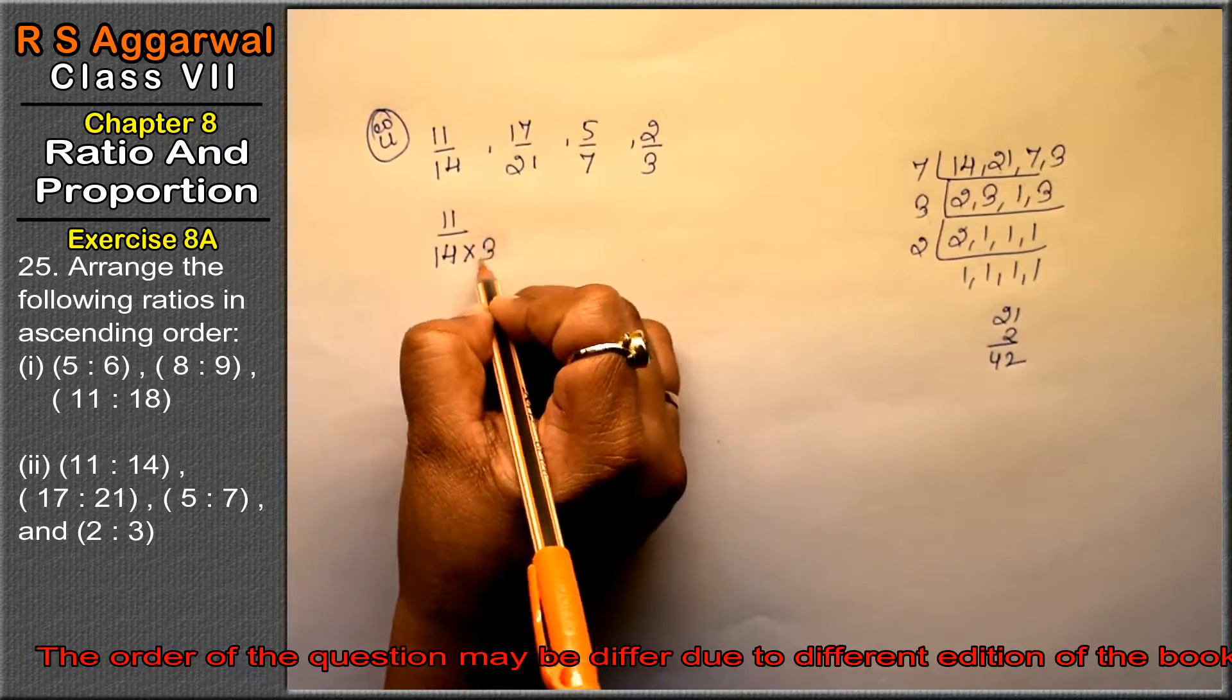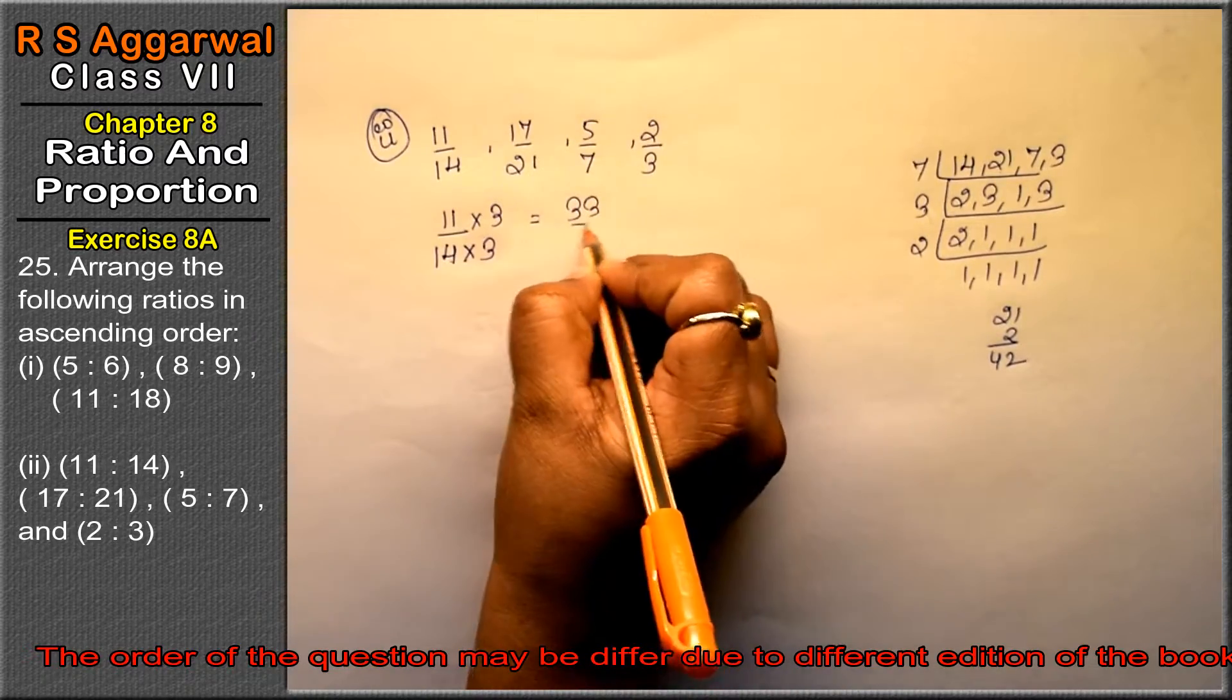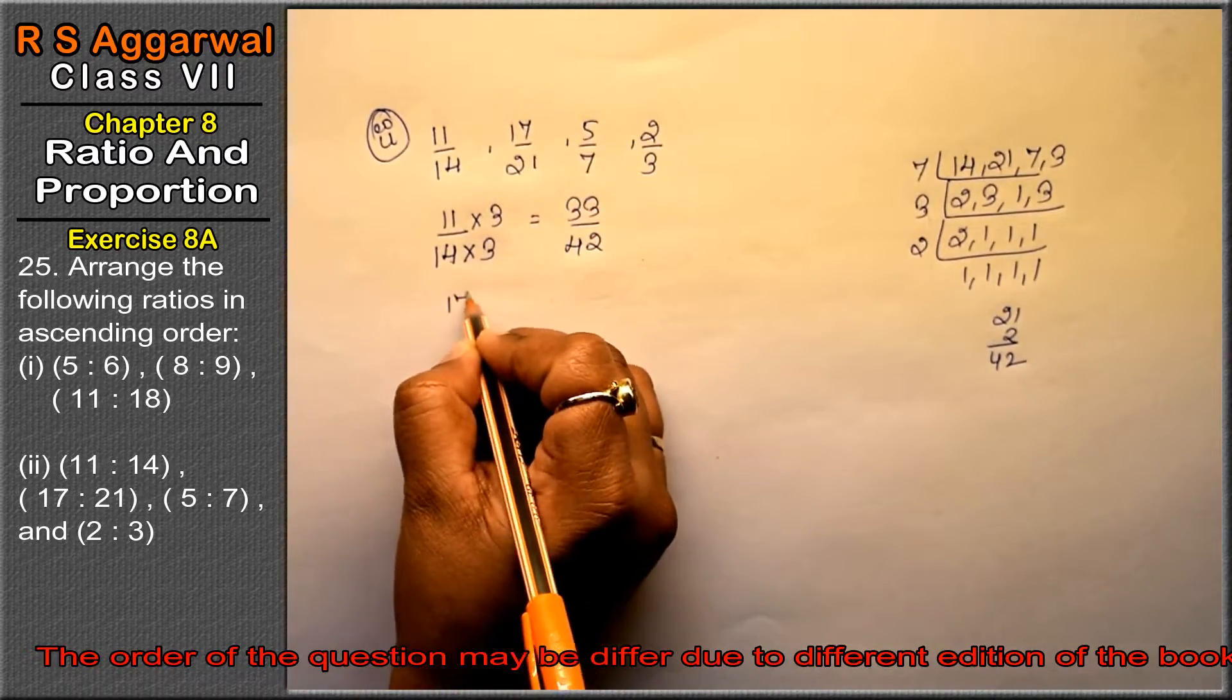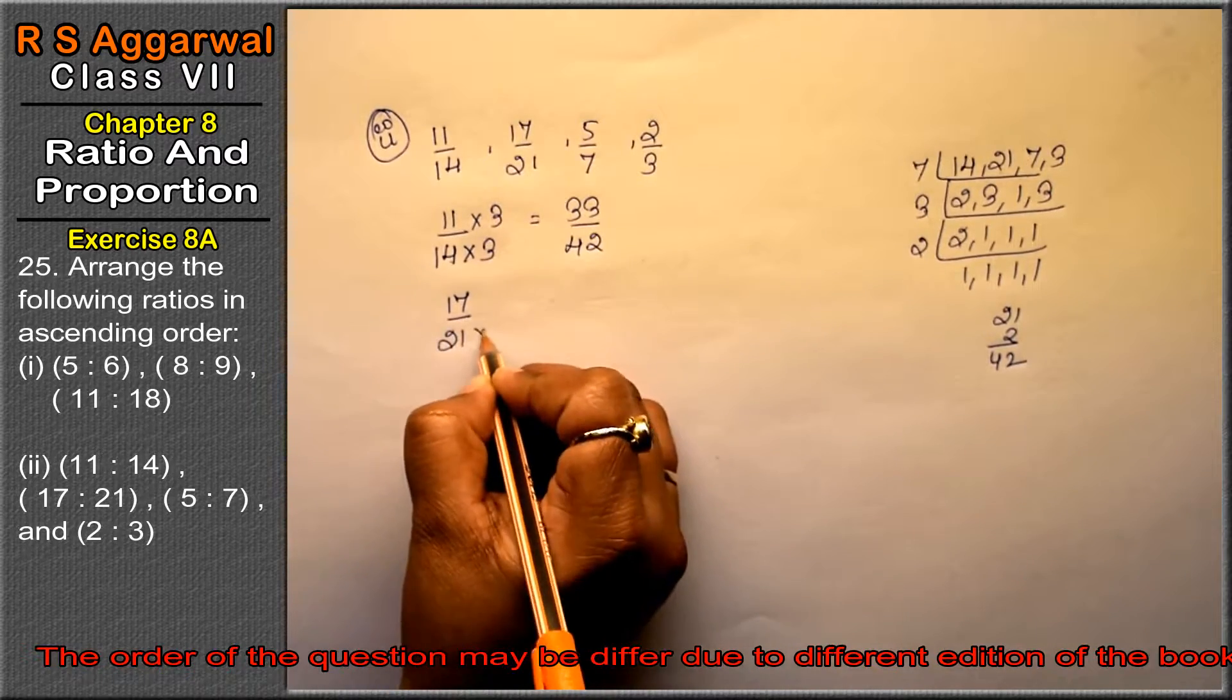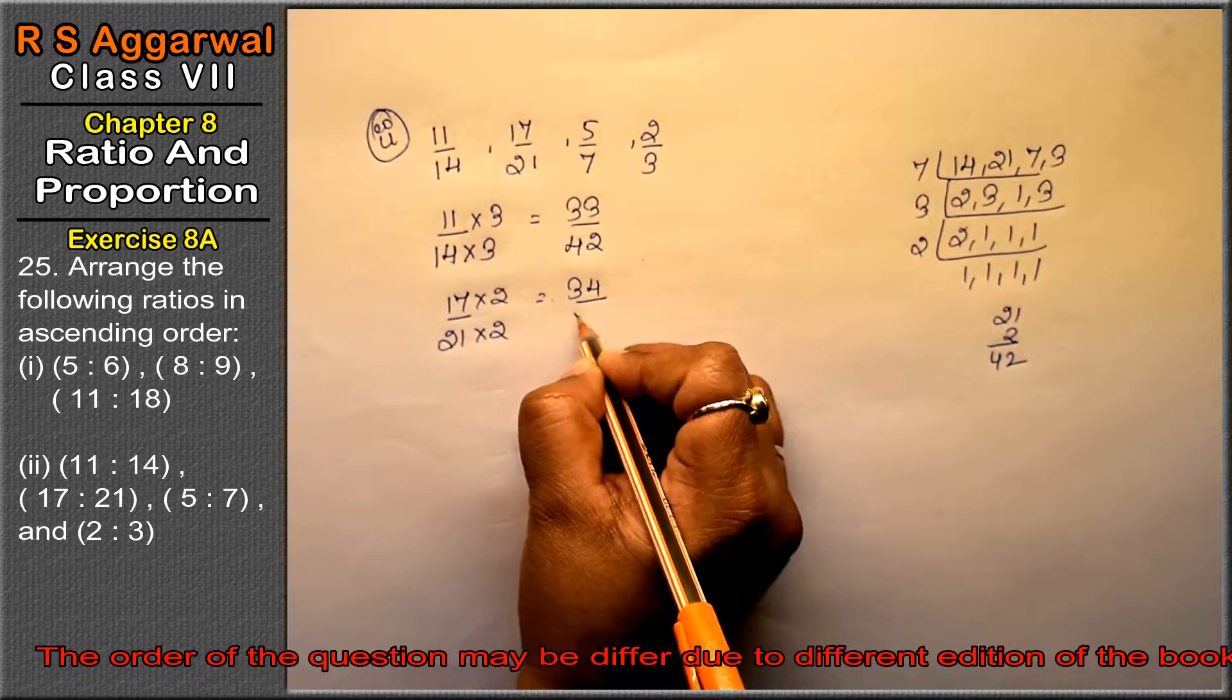14 into 3 is 42, so multiply by 3. So we have 33 upon 42. Next is 17 upon 21. 21 into 2 is 42, so it is 34 upon 42.